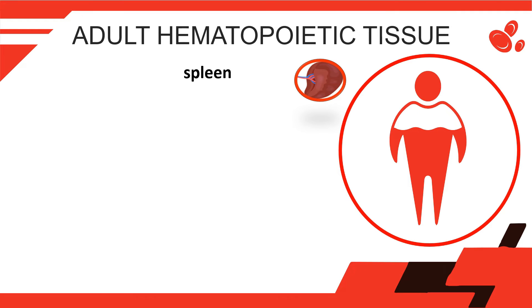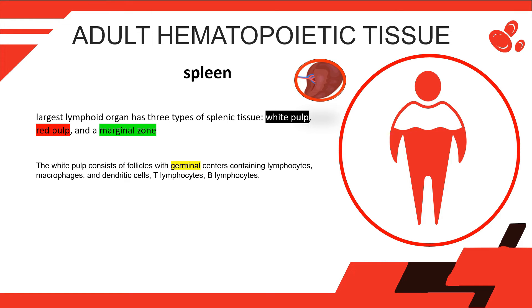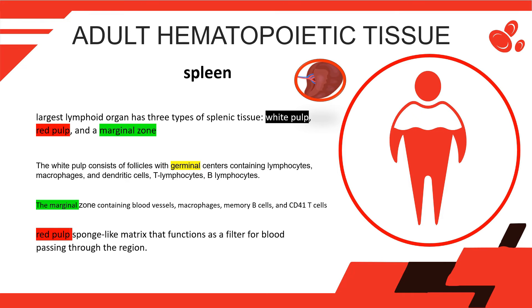The spleen is the largest lymphoid organ in the body. It is vital but not essential for life and functions as a filter of the circulating blood. It has three types of splenic tissue: white pulp, red pulp, and a marginal zone. The white pulp consists of scattered follicles with germinal centers containing lymphocytes, macrophages, and dendritic cells. Aggregates of T-lymphocytes surround arteries passing through these germinal centers, and activated B-lymphocytes are also found there. The marginal zone surrounds the white pulp and forms a reticular meshwork containing blood vessels, macrophages, memory B-cells, and CD4 T-cells. Red pulp is a sponge-like matrix that functions as a filter for blood, leading to the removal of aged red blood cells.